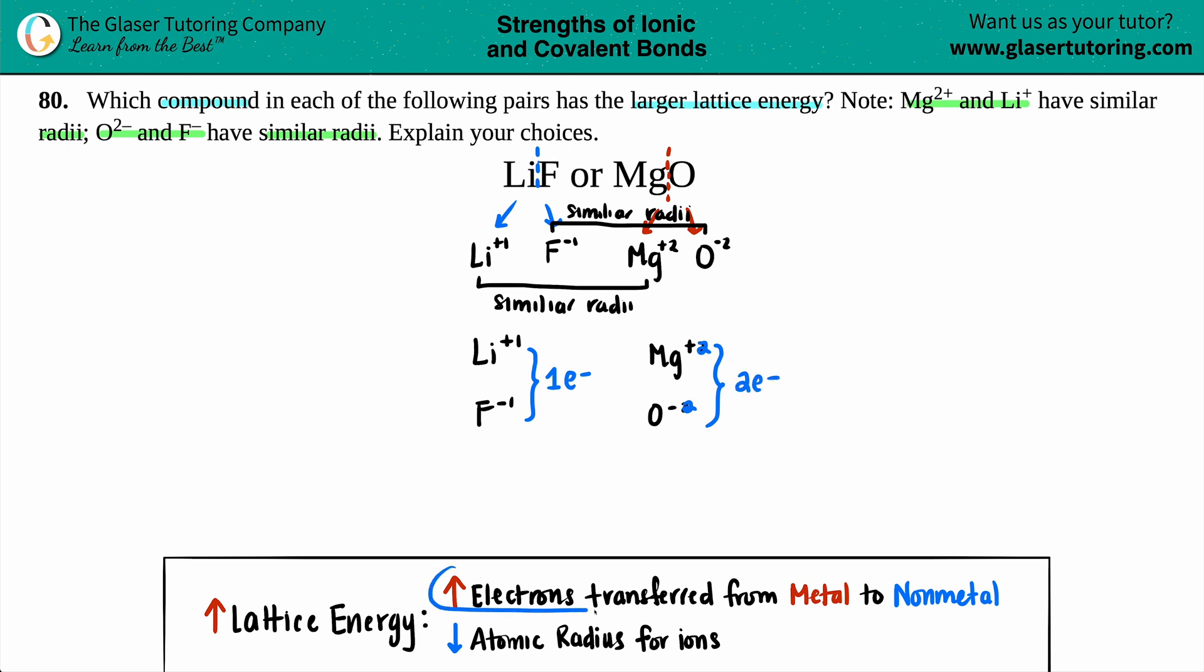The higher the amount of electrons that are transferred from the metal to the non-metal, that tells you that you got a stronger connection and that will raise the lattice energy. So we have two electrons versus one. This has more electrons transferred.